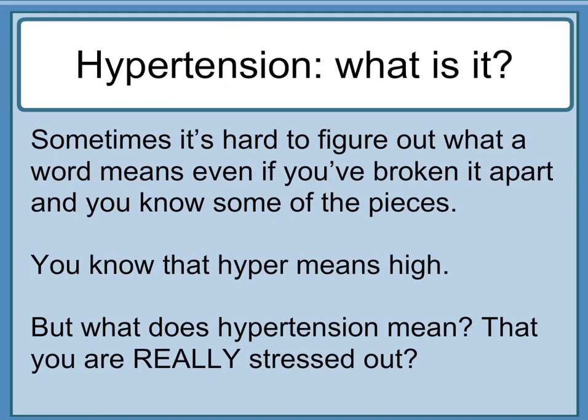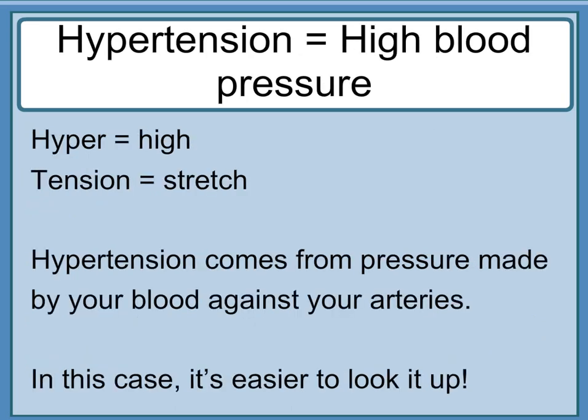Hypertension — what is it? Sometimes it's hard to figure out what a word means even if you've broken it apart and know some of the pieces. You know that 'hyper-' means high, but what does 'hypertension' mean — that you are really stressed out? Hypertension equals high blood pressure. 'Hyper-' equals high, 'tension' equals stretch. Hypertension comes from the pressure made by your blood against your arteries. In this case, it's easier to look it up.